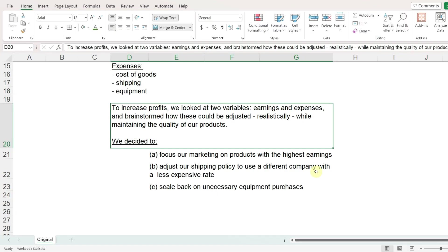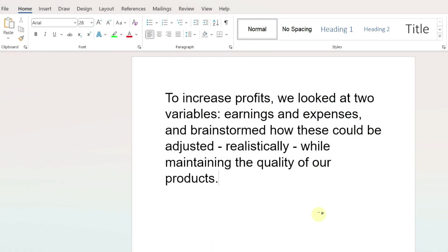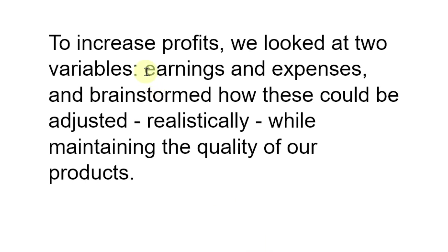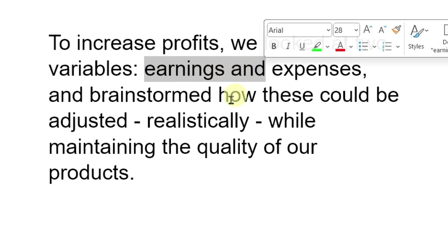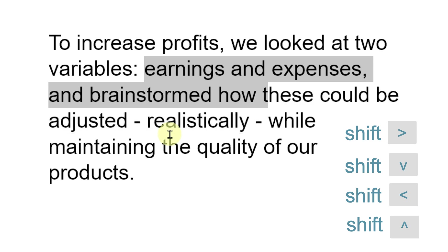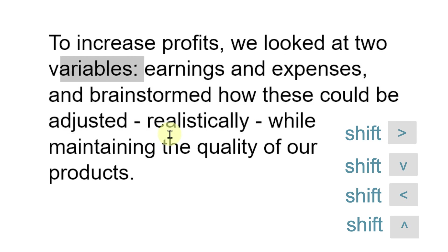Let's look at how to navigate and select text within a paragraph. I'll go to Microsoft Word first because it works the same way there, and then we'll go back to Excel. In Word, to move one character at a time, press the left and right arrow keys. Press up and down to move from line to line. Press and hold Control while pressing the arrow keys to move from word to word. To select text, press and hold Shift while pressing the arrow keys — you can go down, left, or up.